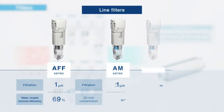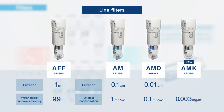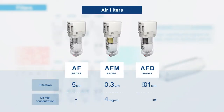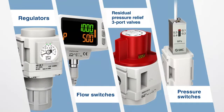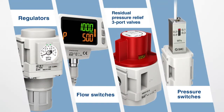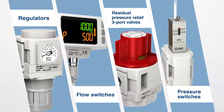The AFF, AM, AMD and AMK all come under our large flow rate filter range. The AF, AFM and AFD are compact type filters. Other products include regulators, flow switches, residual pressure relief three-port valves and pressure switches.